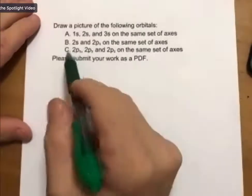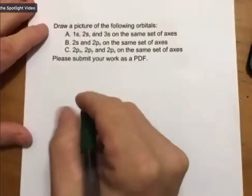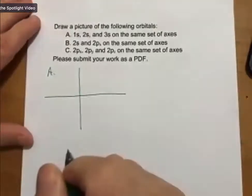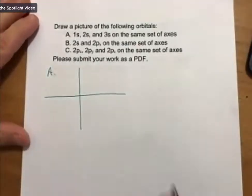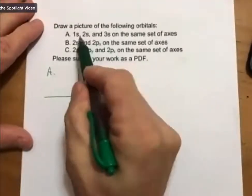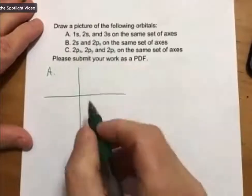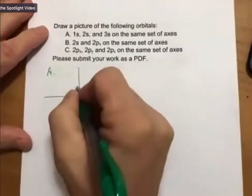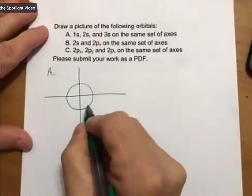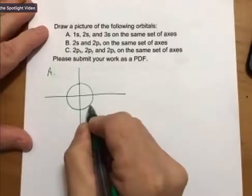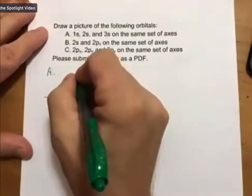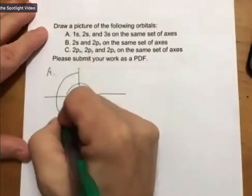So 1s, 2s, and 3s. Let's do A here. If we draw them on the same set of axes, the s sublevels, in which there is only one orbital, are all spheres. When we draw them, we draw circles, and where previously we would call this n equals 1, we are now calling this 1s.